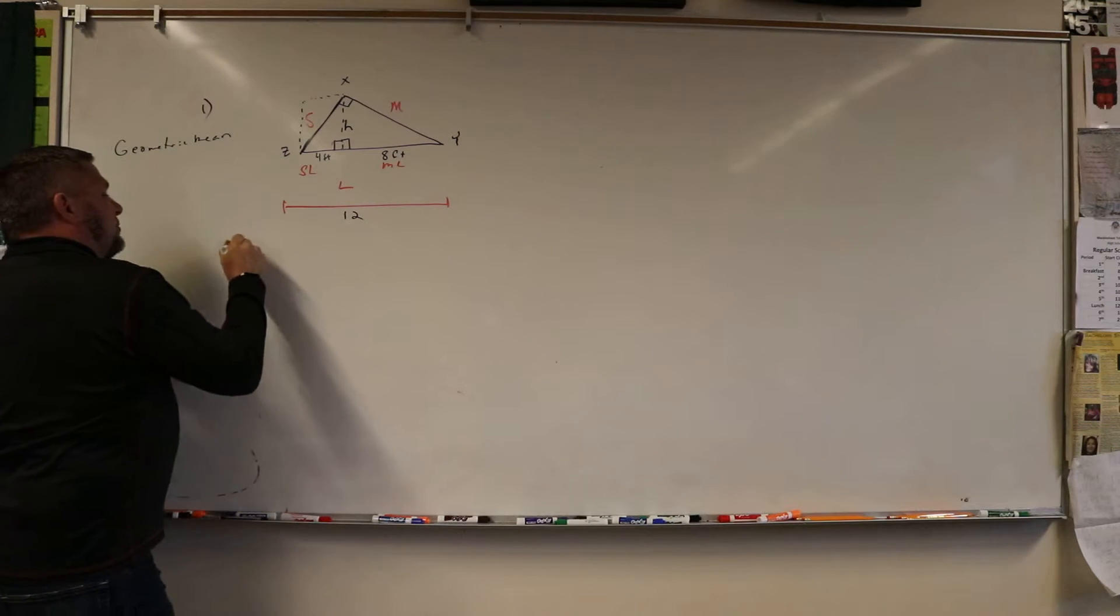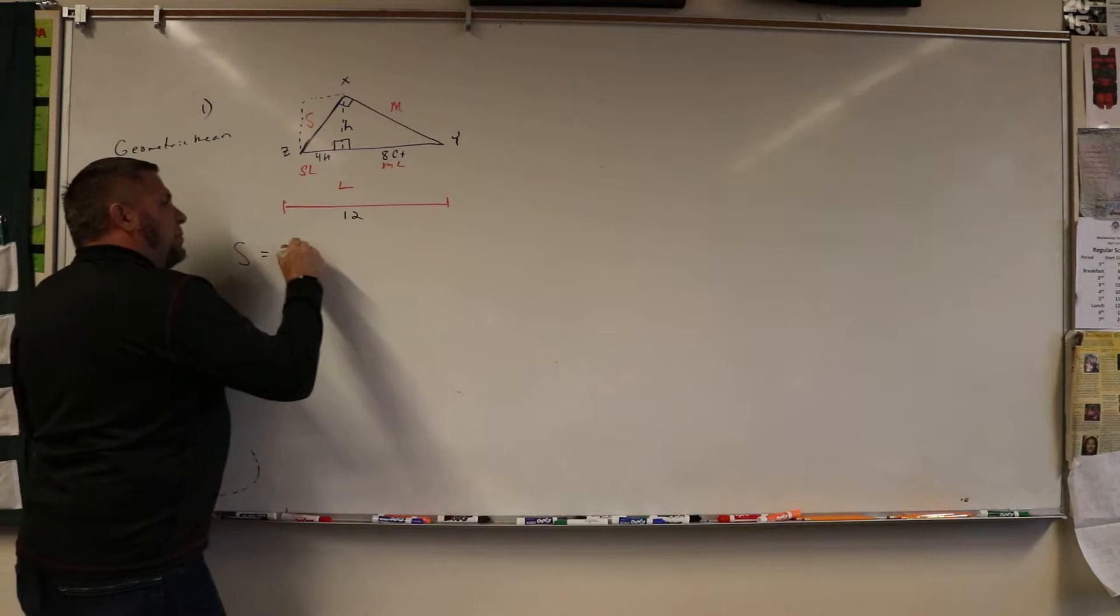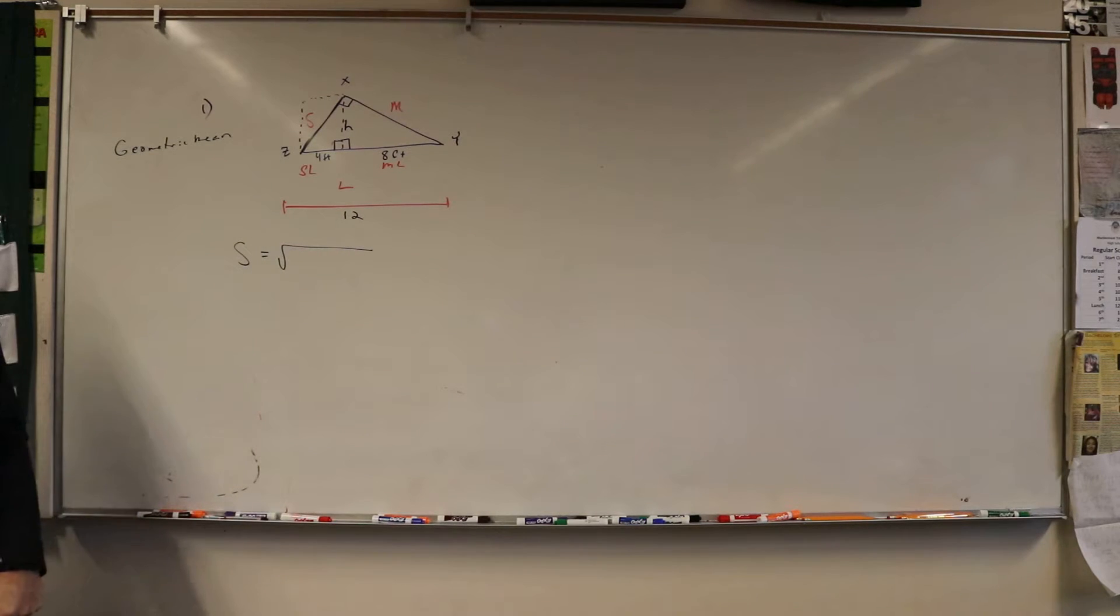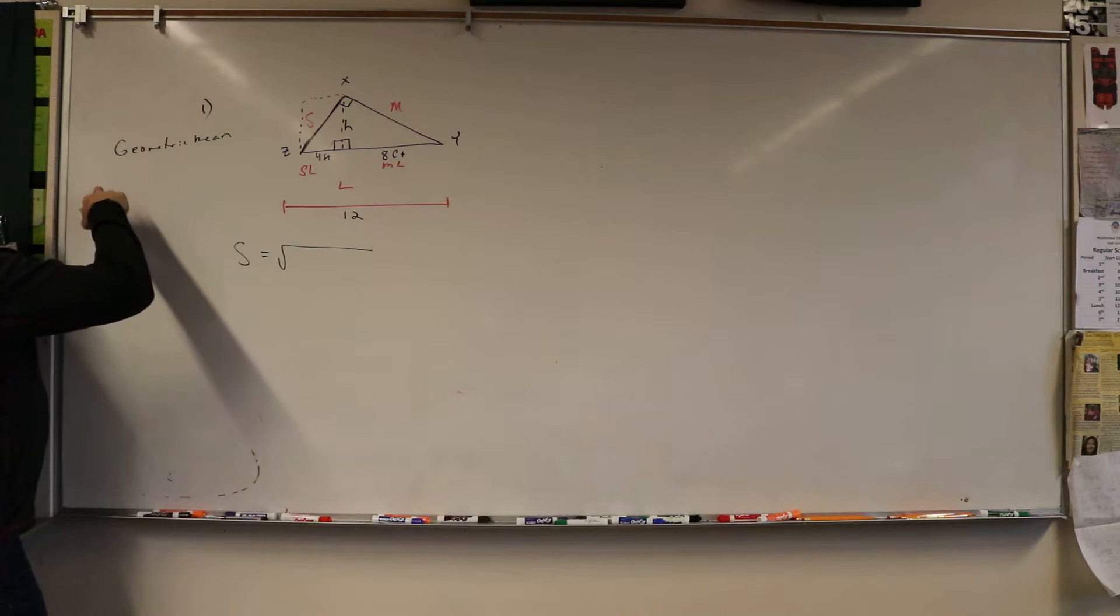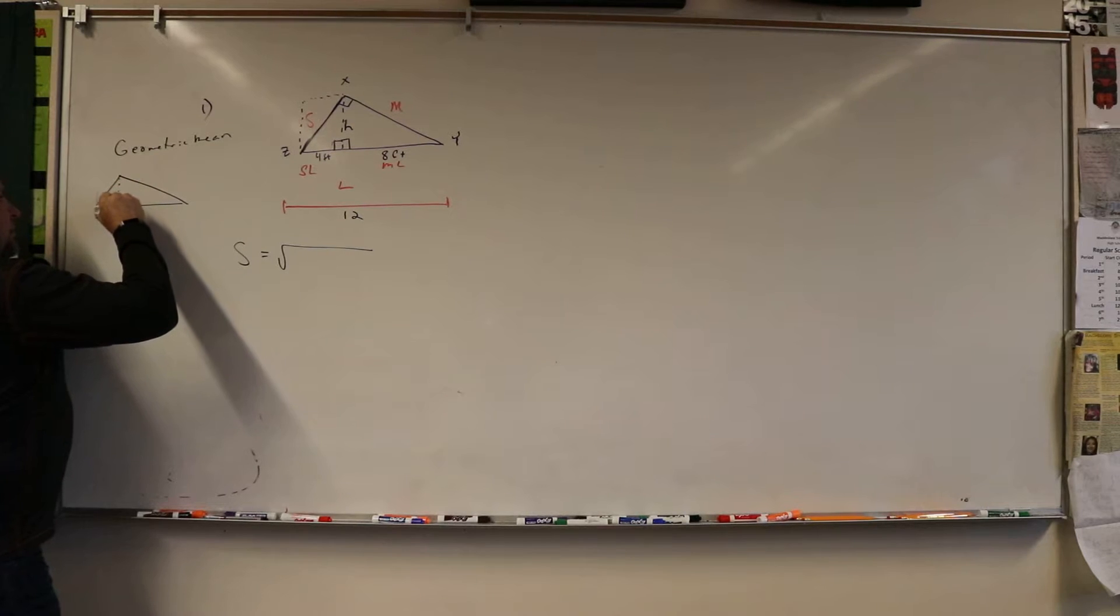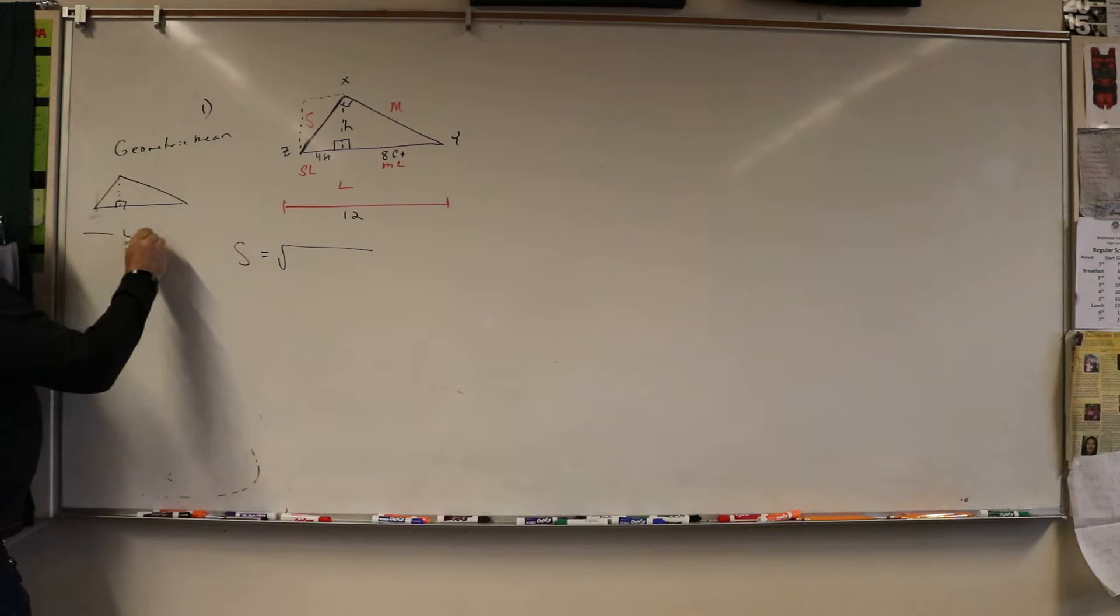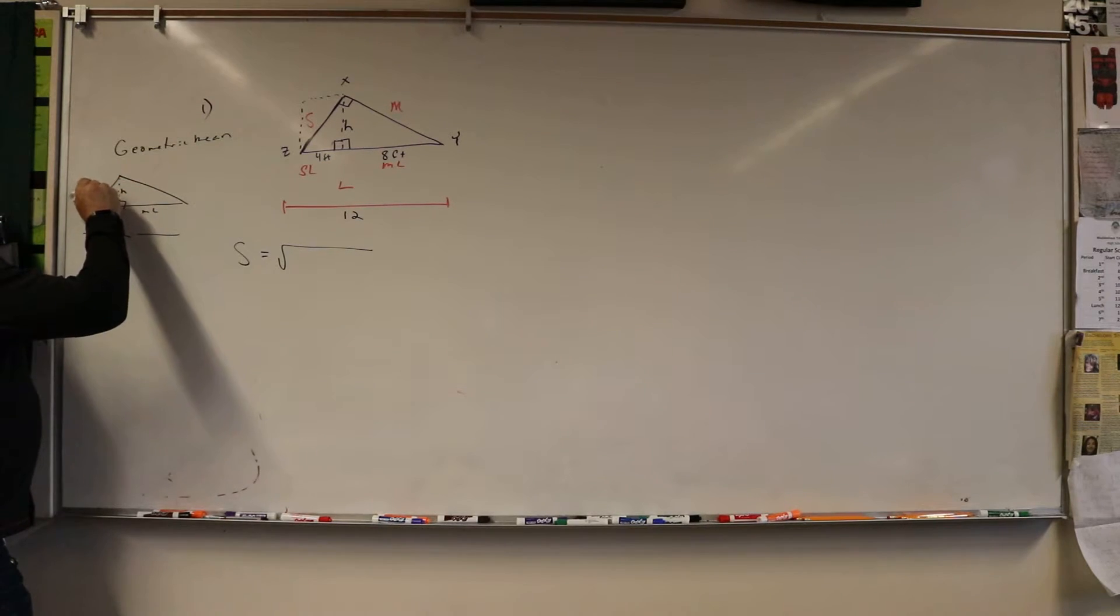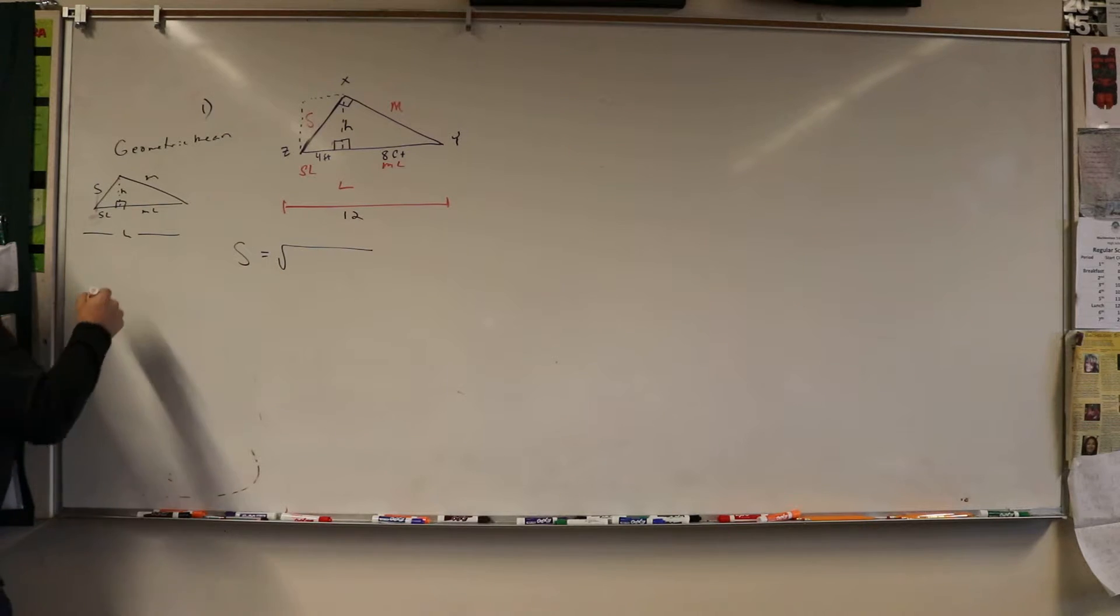If I want to know the small, the small is going to be equal to the square root. If I have this triangle like this, I have this piece, I have the large, I have the small large, the medium large.